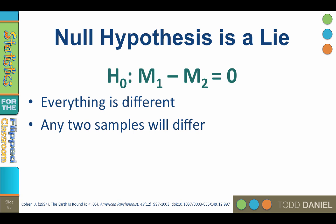When we do null hypothesis statistical testing, we are essentially saying, I'm going to pretend that something is true, even though I know that it's not, and then ask, how likely is it that I would find this difference if this assumption that I know is false was actually true?